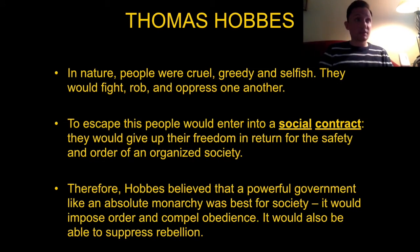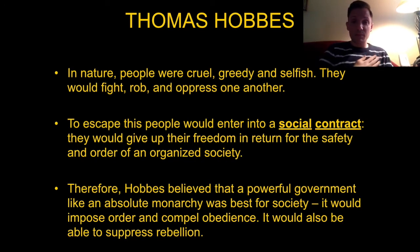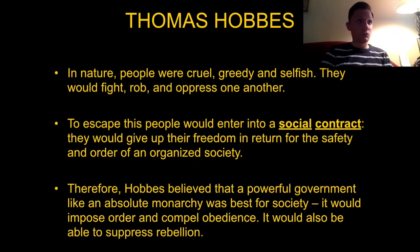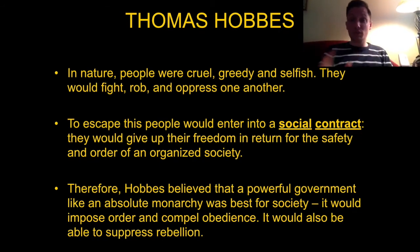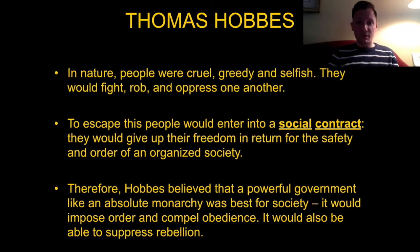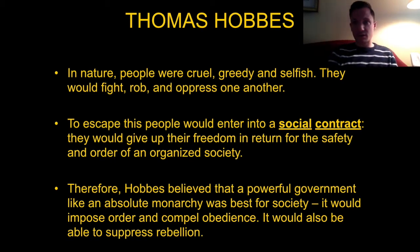The first one is Thomas Hobbes. Thomas Hobbes was born in 1588, and he died in 1673. He believes that in nature, people are disgusting — cruel, greedy, selfish — and that they are going to fight, rob, and oppress one another to gain an upper advantage. So he believes that to get away from all this, people willingly go into what's called the social contract, much like pack animals, giving up their freedom in return for safety in an ordered, organized society. Underlining 'ordered, organized society' in the social contract is a great perspective to use when writing this DBQ.